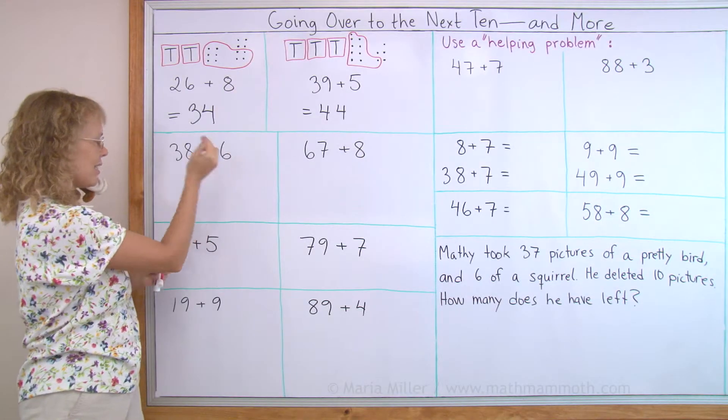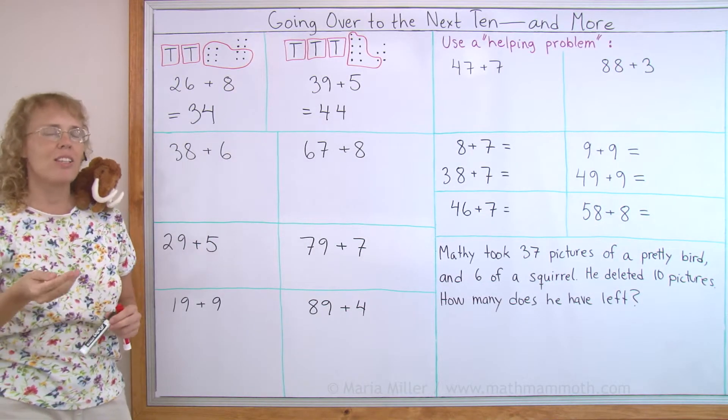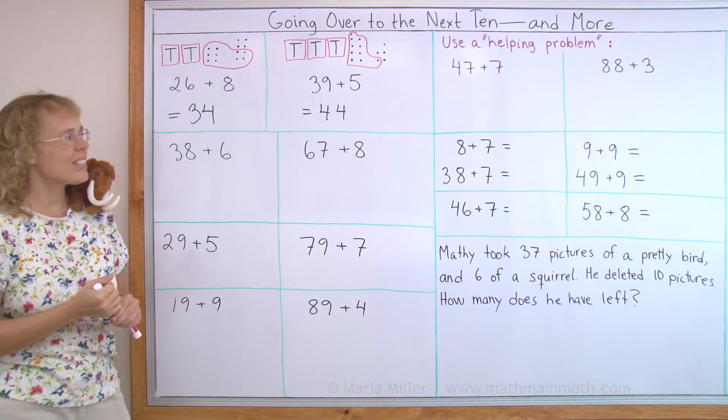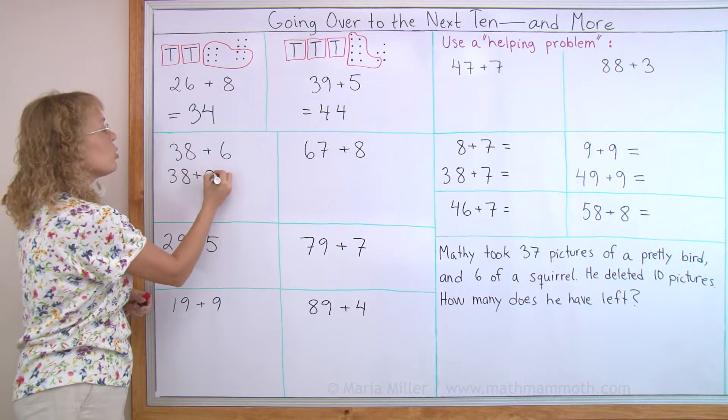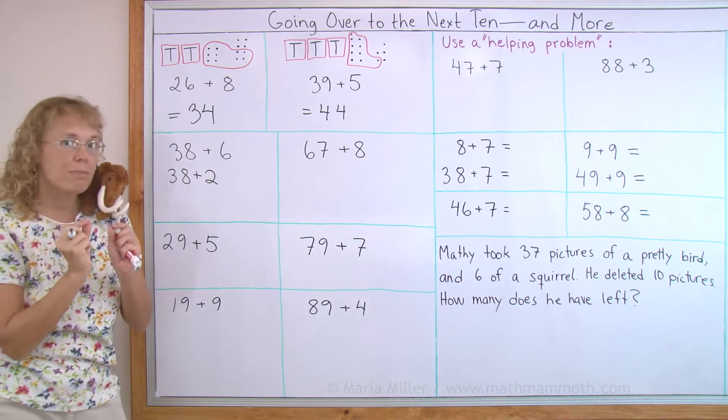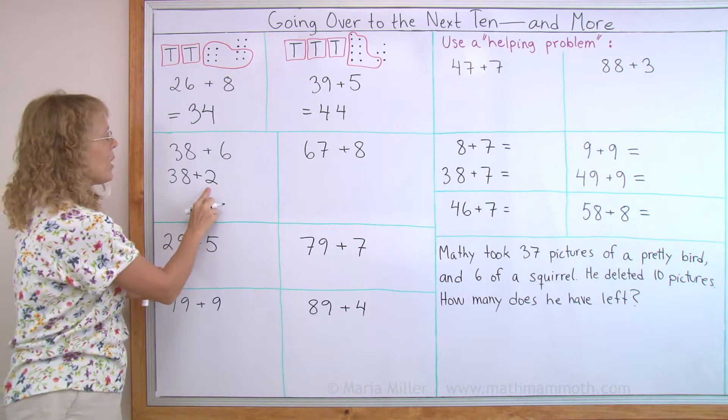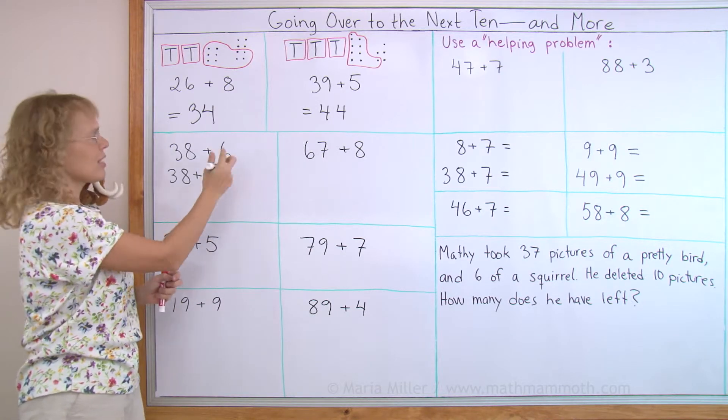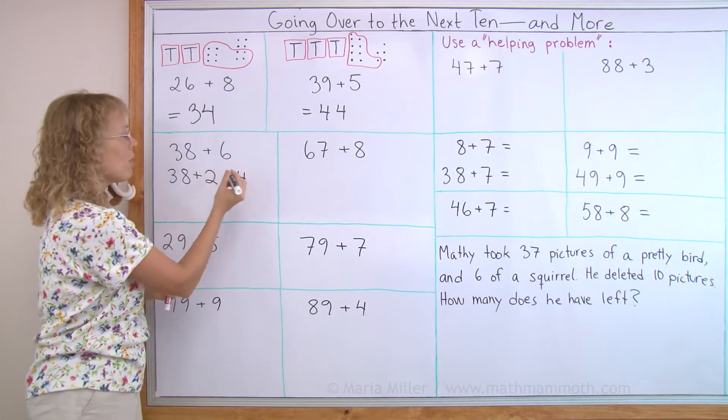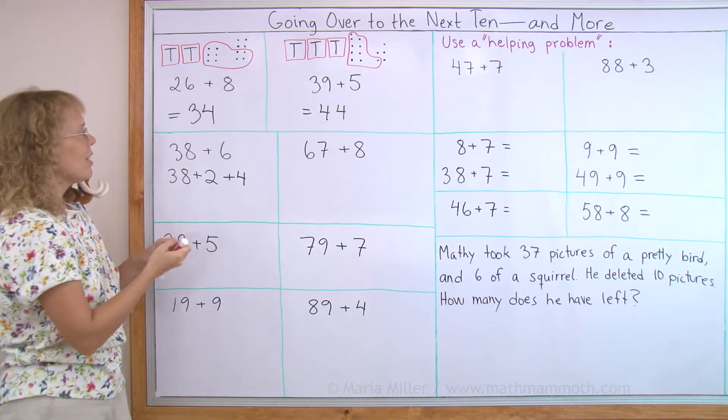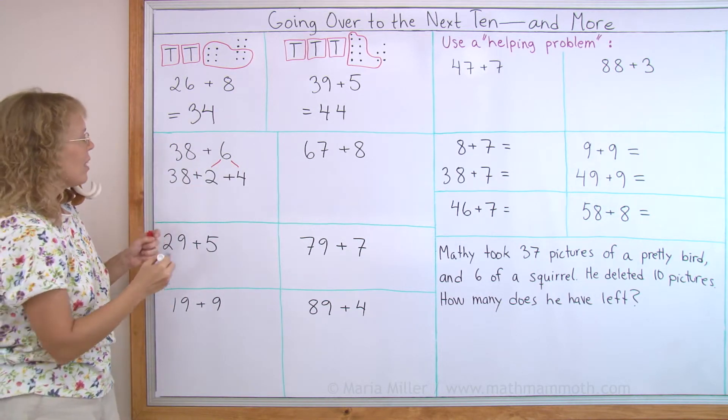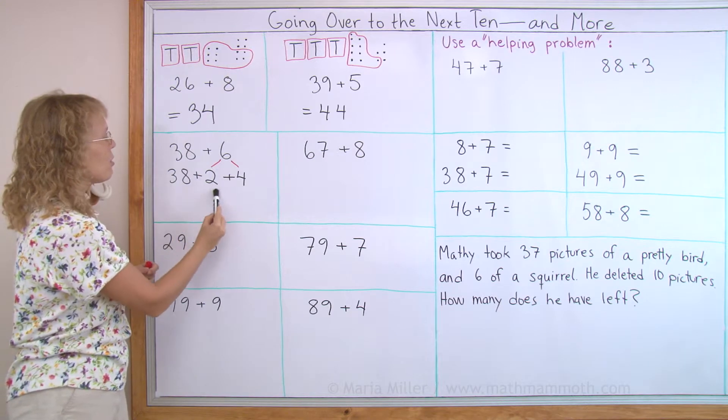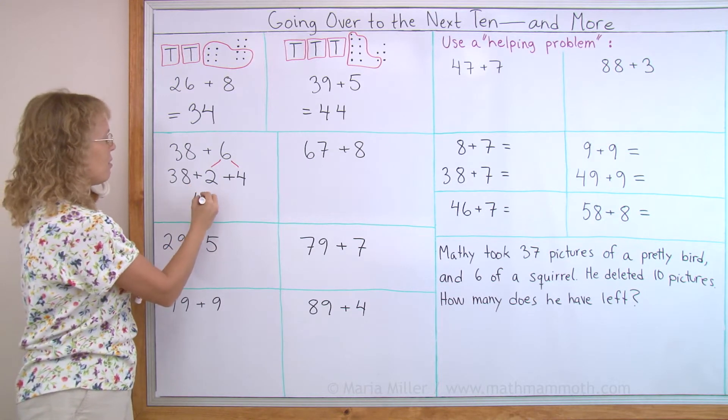38 plus 6. You can think of it this way. You can first complete the next 10 like this: 38 and 2, that would make 40, the next 10. But 2 is not enough because you have to add 6. So you need to add 4 more after that. This 6 is like broken into 2 parts, 2 and 4. And so now here, this makes 40 and that is 4, which is 44.